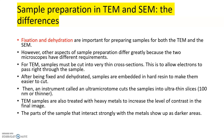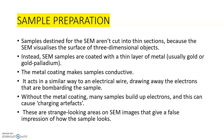TEM samples are also treated with heavy metals to increase the level of contrast in the final images. The parts of the sample that interact strongly with the metals show up as darker areas. This relates to the shadow-cast mechanism, which will be discussed later.